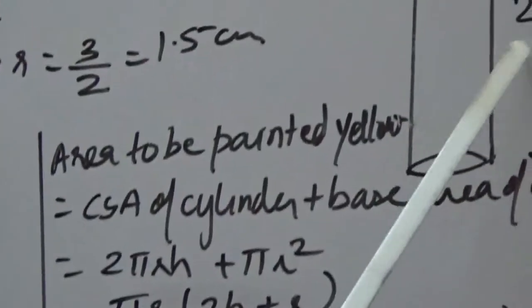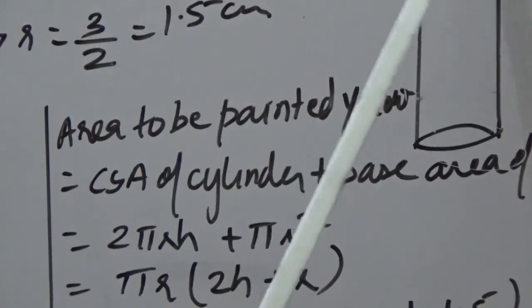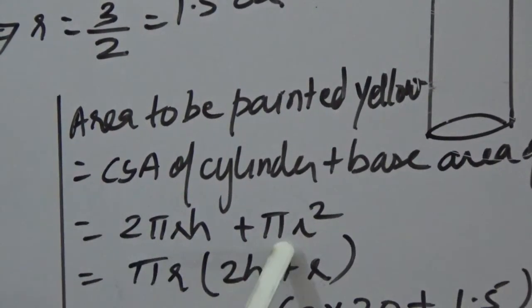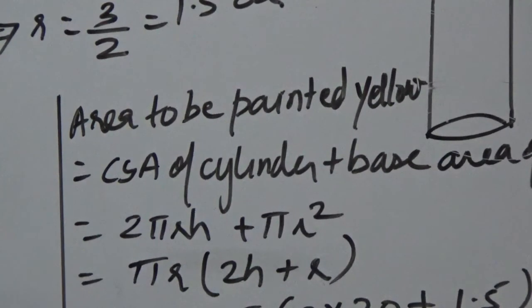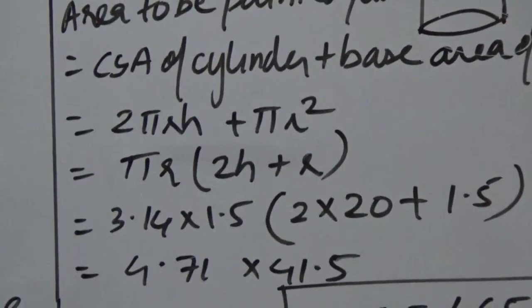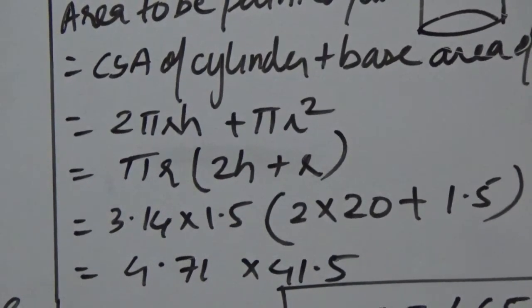Area to be painted yellow = CSA of cylinder + base area of cylinder = 2πrh + πr². Taking πr common: πr(2h + r). Substituting cylinder radius r = 1.5 and height h = 20, we get the area to be painted yellow as 195.465 cm².